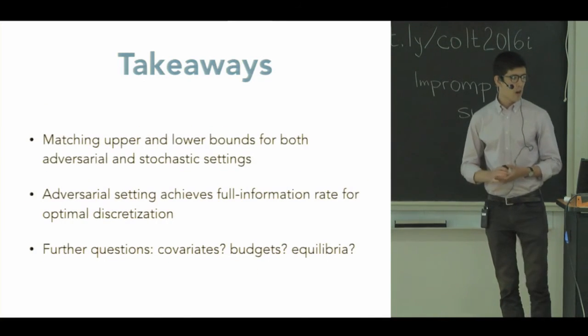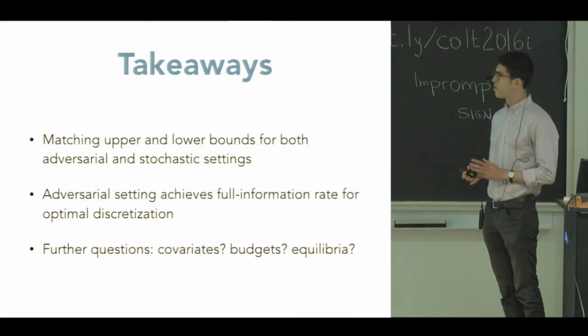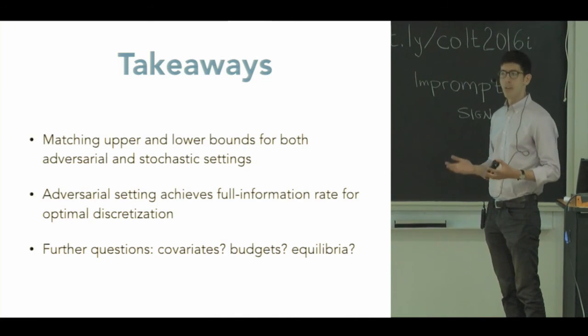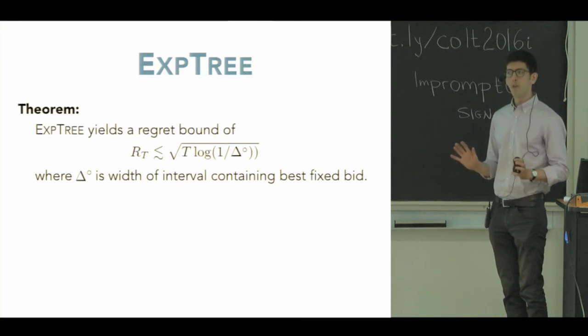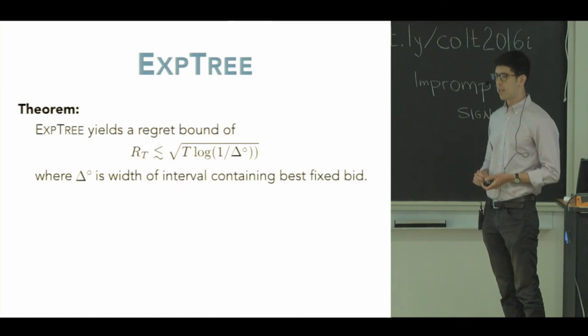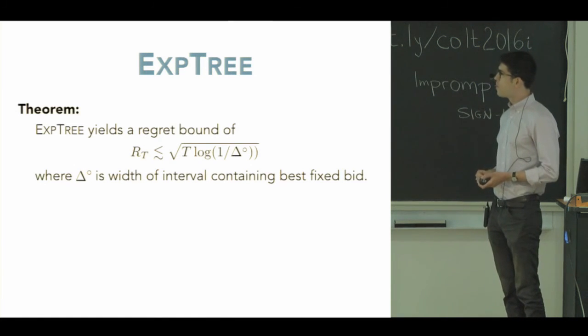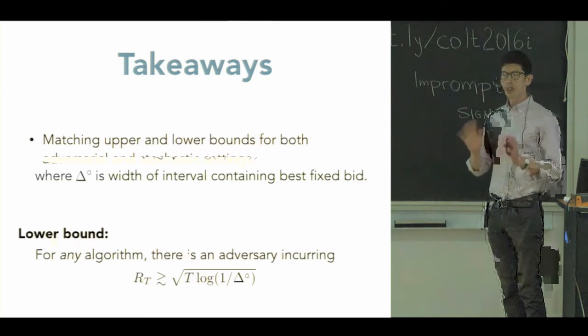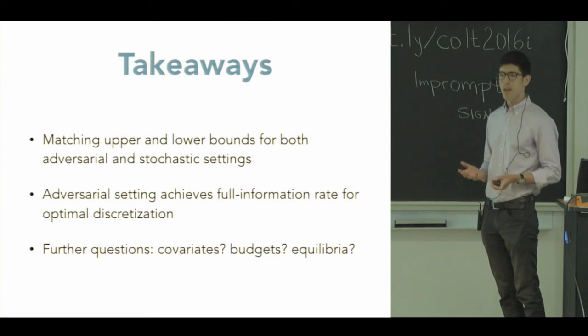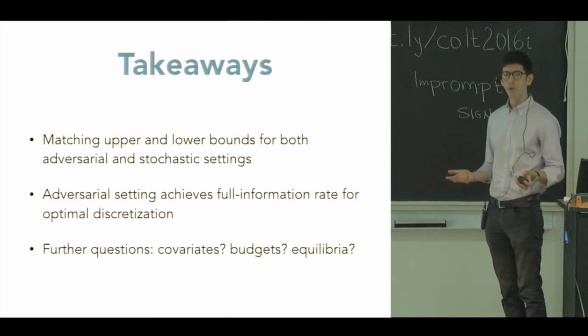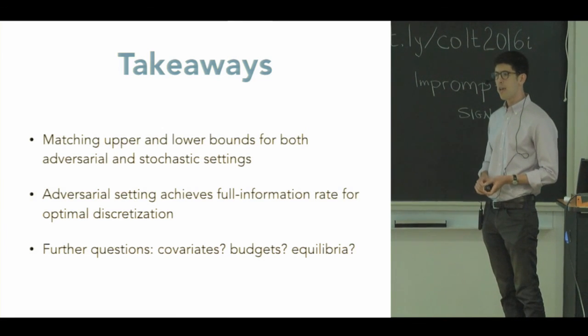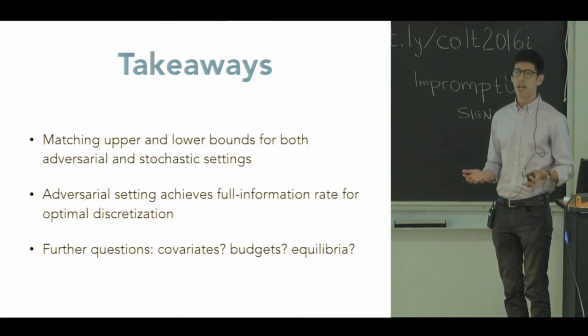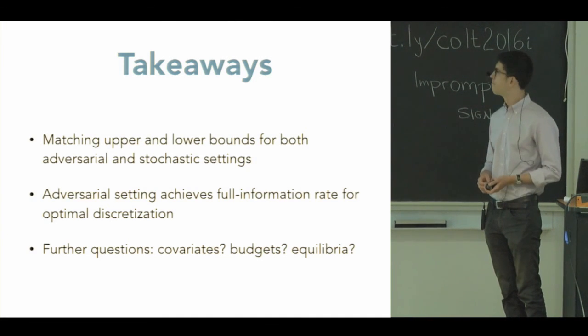So the takeaways from this are that we have matching upper and lower bounds up to log terms for both the adversarial and stochastic settings for the strategies that we propose. And one interesting thing about the adversarial setting on the previous slide, I'll just note, is that this looks like a full information rate. We get log 1 over delta, log 1 over the smallest interval. So this is the full information rate that we would get with an optimal discretization in advance. There's no price to pay here for the partial information. We have a lot of further questions we'd like to ask about the effect of covariates, about whether the advertisers have budgets, how that might affect their play, and finally, what game theoretic equilibria arise when a lot of people play with algorithms of this type. Thanks.